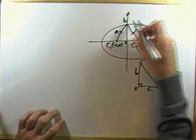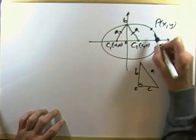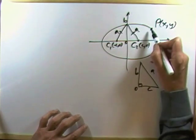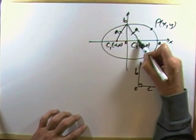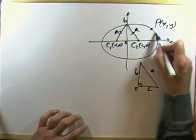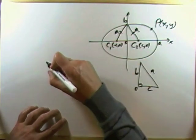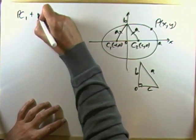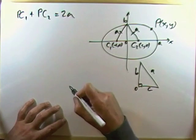So, to find the equation of that, you need to find the connection between the coordinates of any point that belongs on it. And that connection will be the distance of the point to c1, and the distance of the point to c2 must be the same as 2a, because it's the same all the way around. So, we can start off that way then. The distance of the point to c1 plus the distance of the point to c2 must be equal to 2a.